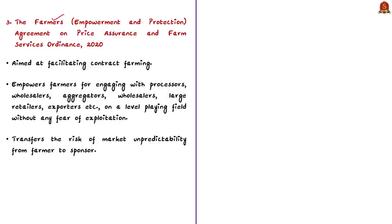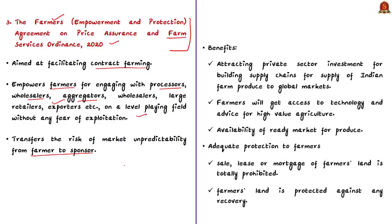The cabinet also approved the Farmers Empowerment and Protection Agreement, Price Assurance and Farm Services Ordinance 2020, aimed at facilitating contract farming. It empowers farmers for engaging with processors, wholesalers, aggregators, large retailers, and exporters on a level playing field without fear of exploitation. The ordinance transfers the risk of market unpredictability from the farmer to the sponsor, as the private buyer contracts to purchase a crop at a certain price at the beginning of the season itself.